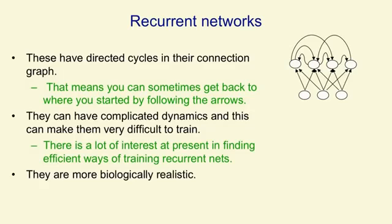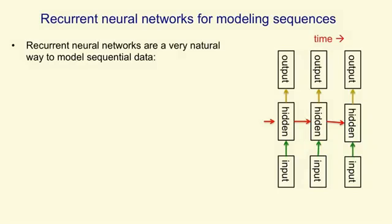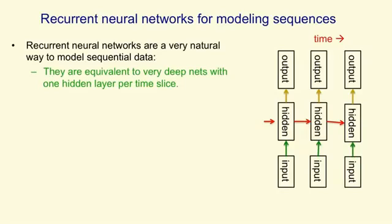They're also more biologically realistic. Recurrent neural networks with multiple hidden layers are really just a special case of a general recurrent neural network that has some of its hidden-to-hidden connections missing. Recurrent neural networks are a very natural way to model sequential data. We have connections between hidden units, and the hidden units act like a network that's very deep in time. At each time step, the states of the hidden units determine the states of the hidden units at the next time step.